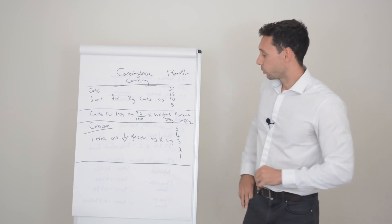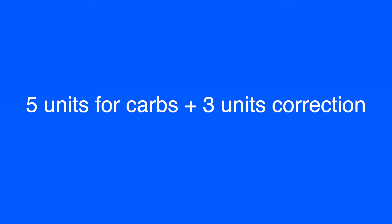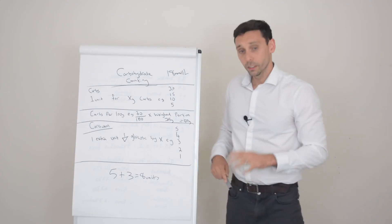Okay so what's our total dose then? So we have five for the food plus three for the correction. So our total insulin dose is eight units for that meal. Hopefully that makes sense.